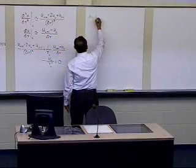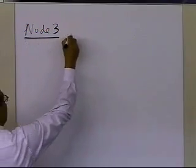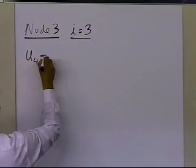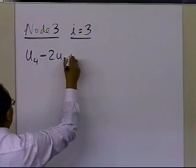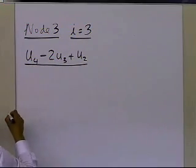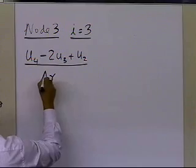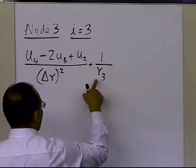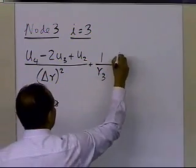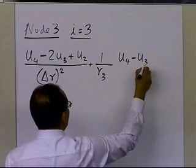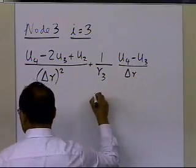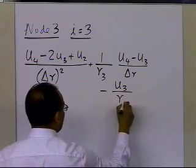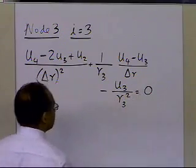Writing the equation for node 3, where i equals 3, I get u_4 minus 2·u_3 plus u_2, substituting i=3 into my equation, divided by delta r squared, plus 1 over r_3 — the value of r at the third node — times (u_4 minus u_3) divided by delta r, minus u_3 divided by r_3 squared, equal to 0.